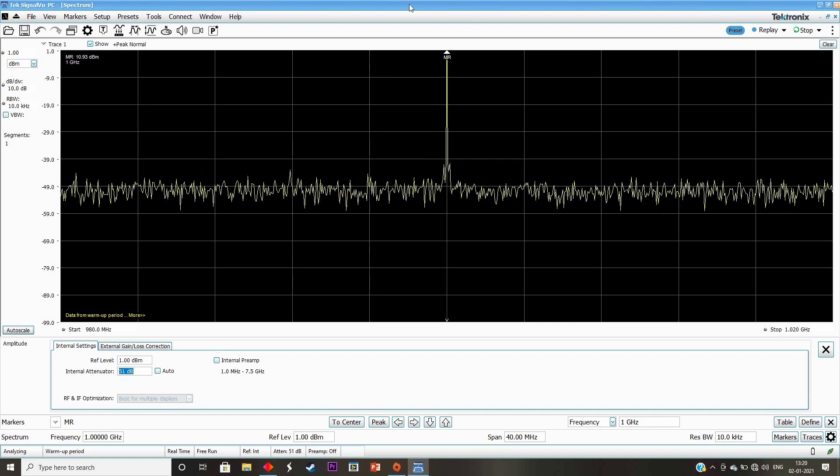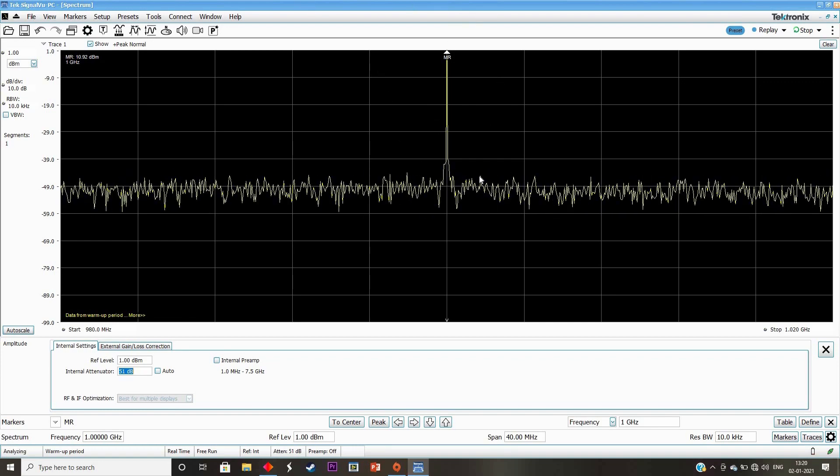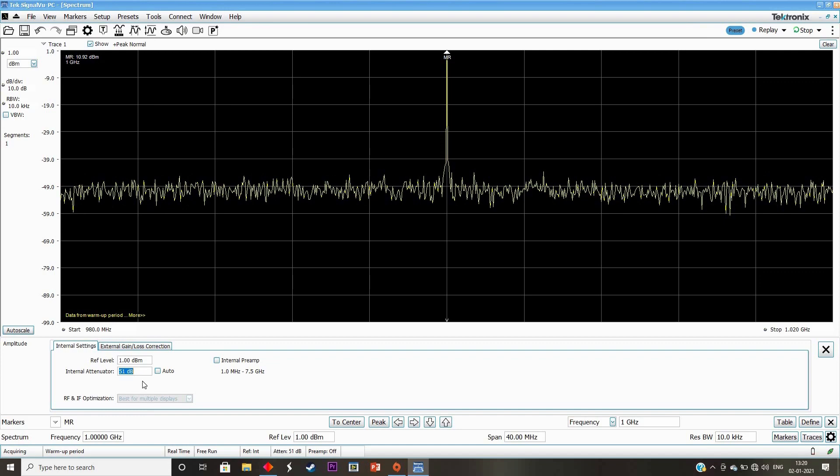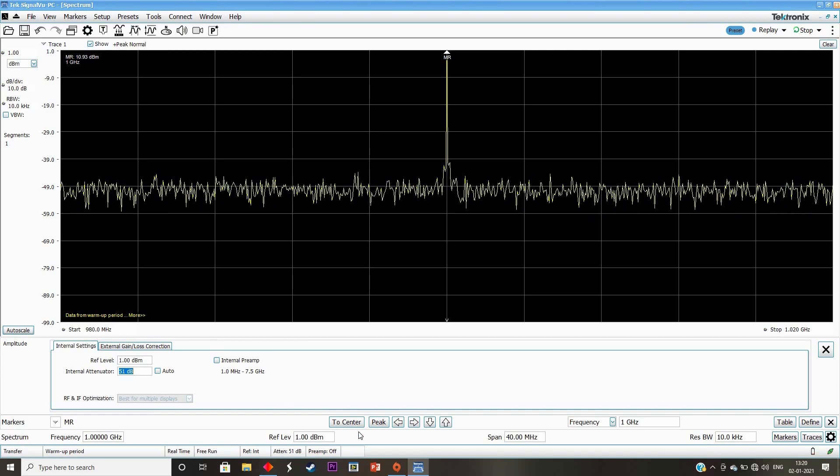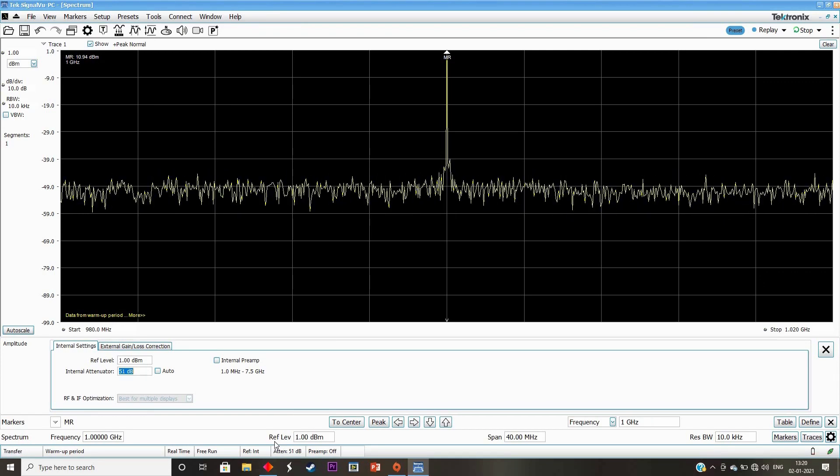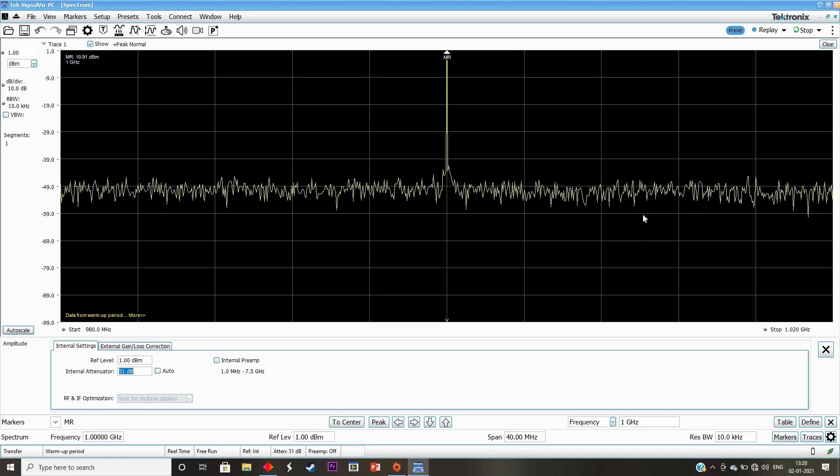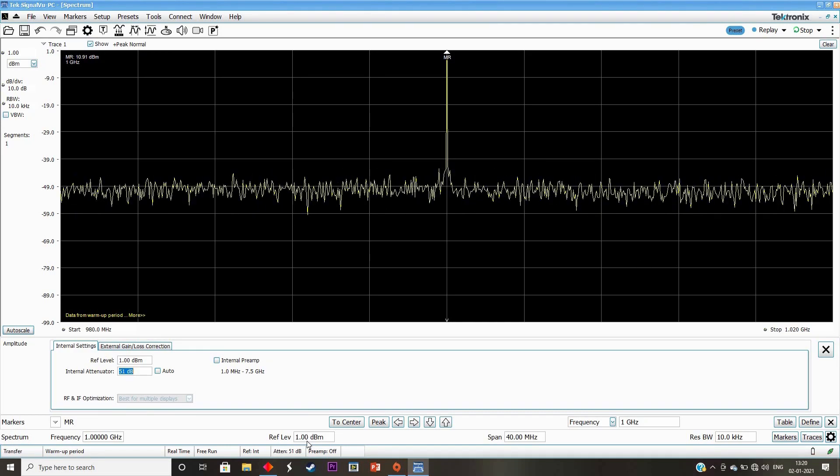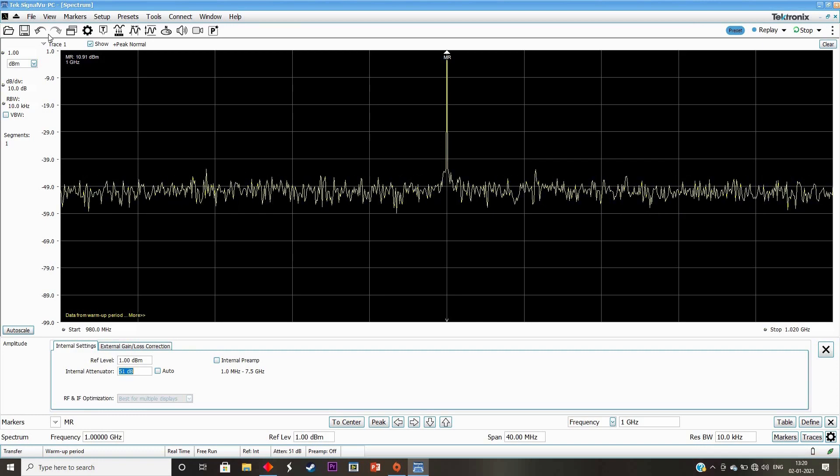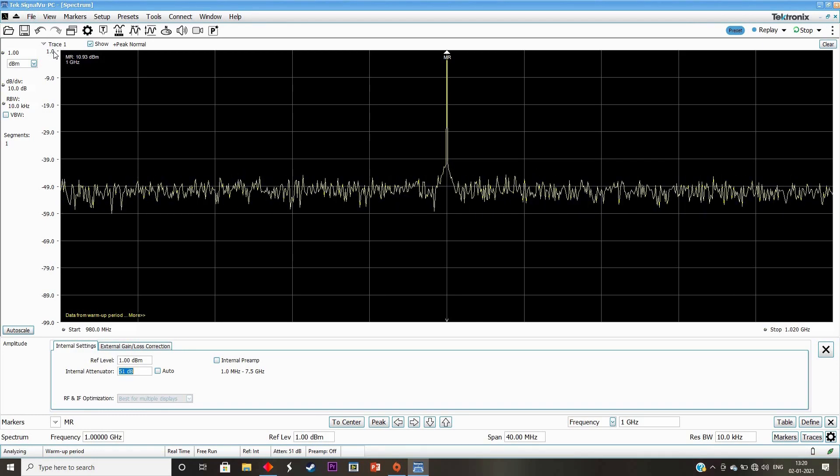The easiest way of doing is through reference level, and reference level also sets the Y-axis display. When you do not want to change the Y-axis and want to avoid ADC over range, you need to go to amplitude settings and check the auto button.